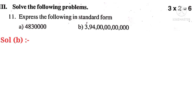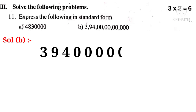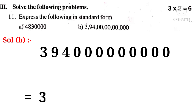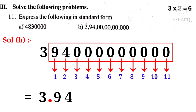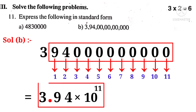Solution B: Write 3, 9, 4 followed by 9 zeros. Write only non-zero digits: 3, 9, 4. Put a decimal point to the right of 3. Count the digits to the right of 3 — there are 11. So write into 10 power 11. Thus 3.94 into 10 power 11 is the standard form of the given number.